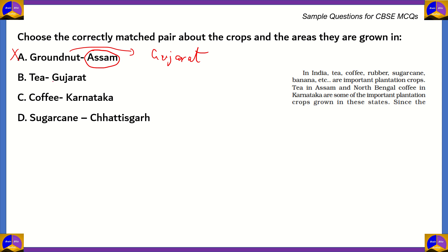What about option B? It says tea in Gujarat. Gujarat is very dry, and tea requires a moist climate. Therefore, states like Assam, Kerala, etc. are leaders in growing tea. So option B is also incorrect.